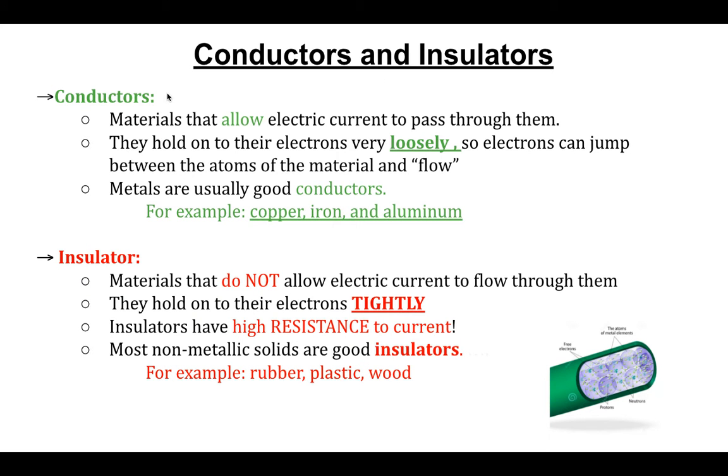All right, so conductors versus insulators. So materials that allow electric current to pass through them are known as conductors. They hold onto their electrons really loosely. So electrons can jump between the materials atoms really easily. And that's how the electricity flows. So copper, iron, aluminum, all these are examples of really good conductors. And you probably know this from middle school.